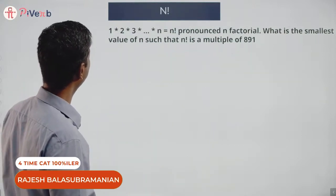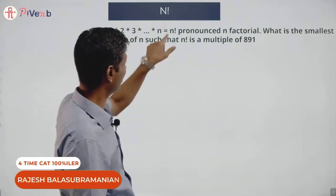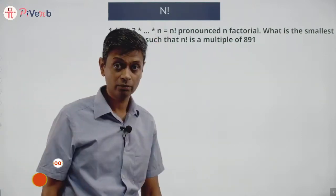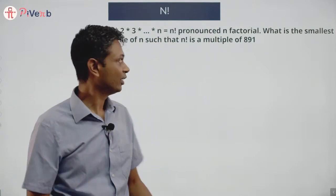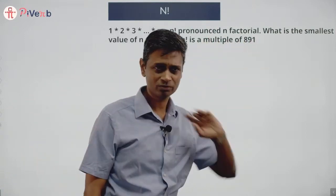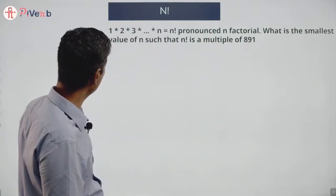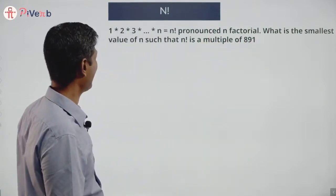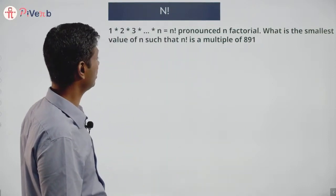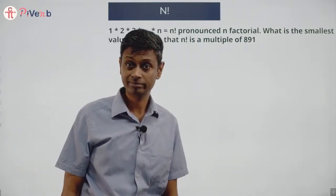1 into 2 into 3 into 4 into 5 till n — written with an exclamation mark — is called n factorial. What is the smallest value of n such that n factorial is a multiple of 891?